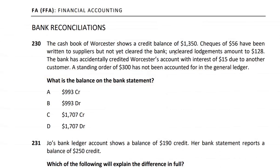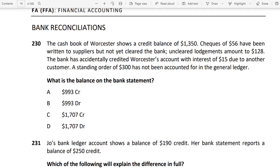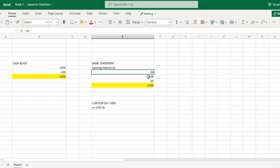The uncleared lodgement means the customer has paid us. This means our balance will increase. We have recorded it in the cash book but the bank has not yet credited our account. So this is added to the bank balance — we add this item to the bank statement.